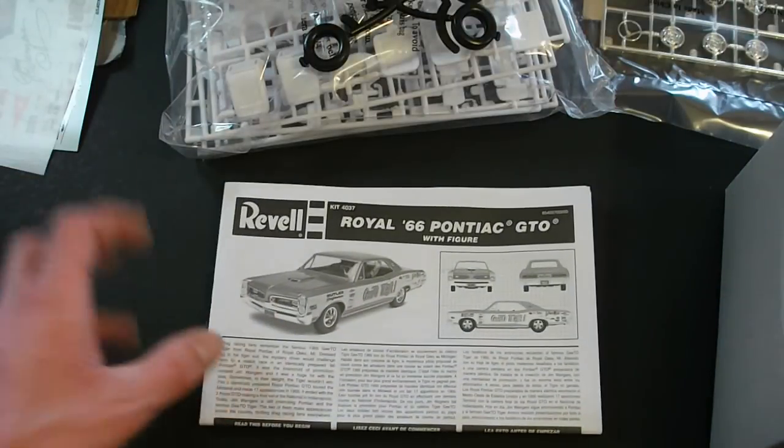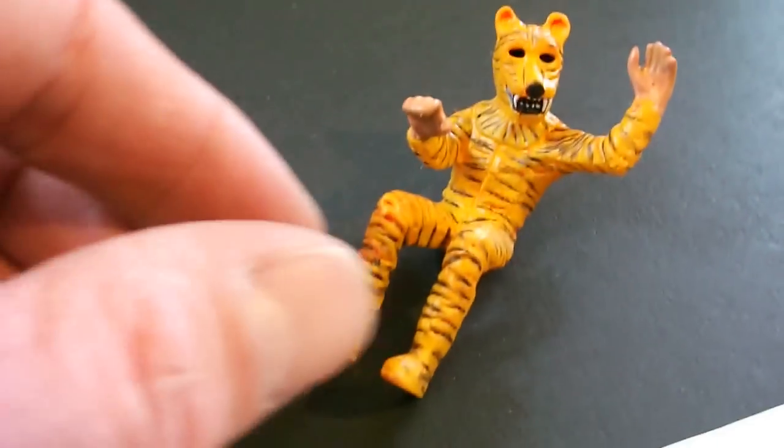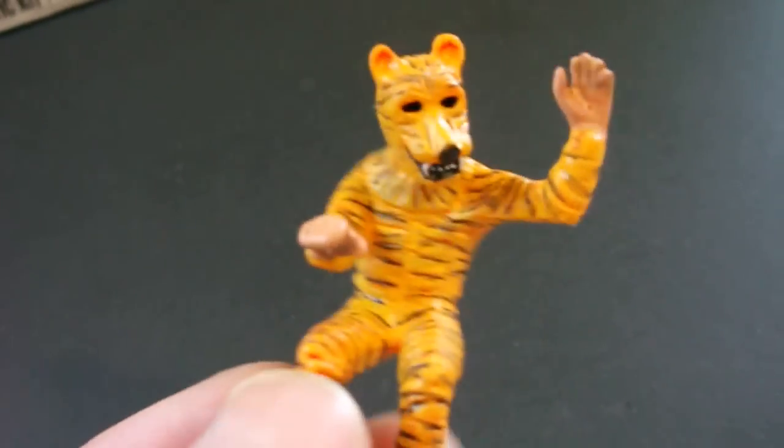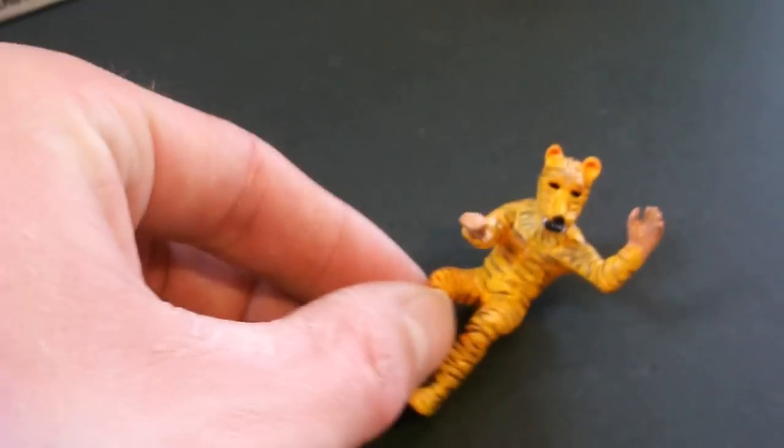So now what I'll do is take everything out, give you guys a close up look at all these parts. To start off here is the pre-painted tiger that comes included with the kit and the detailing and painting is excellent. And it'll just fit in there and go along with the car if you'd like it to.